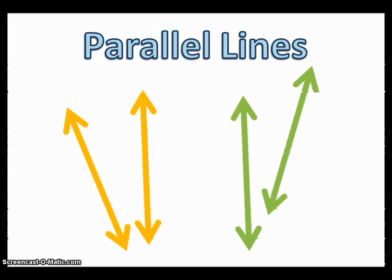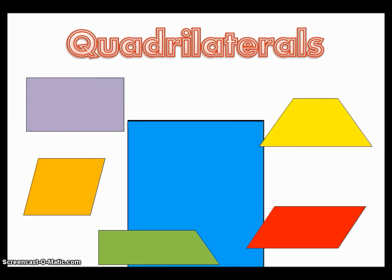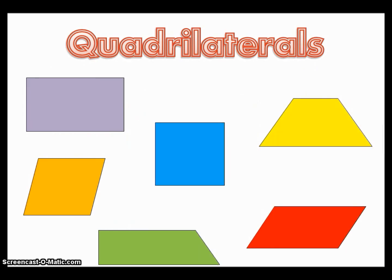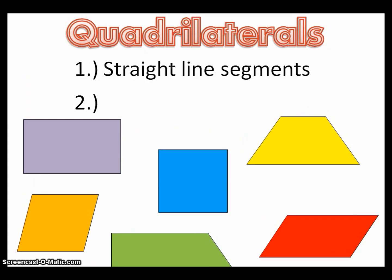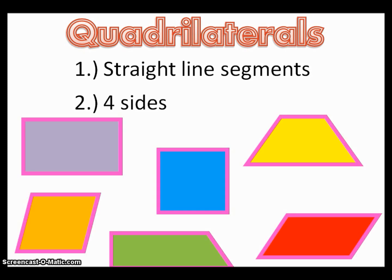So now that we've looked at polygons and some of our vocabulary words, let's look at quadrilaterals. Quadrilaterals really only have two major things. One, they're made of straight line segments. So really, they're just polygons. But they're polygons that have four sides. This is the key part for quadrilaterals.